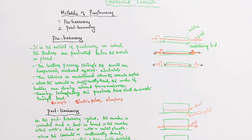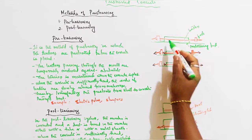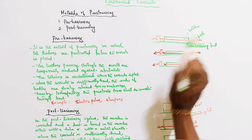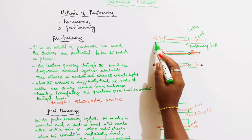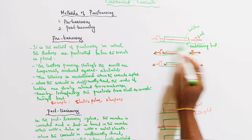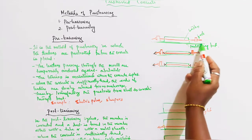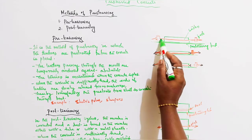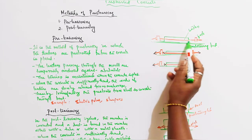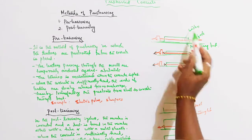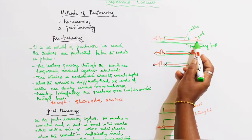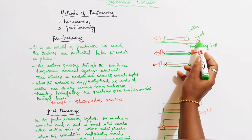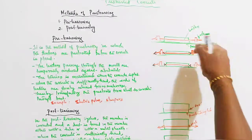Looking at the figure: we have a pre-stress beam, a tendon, a pre-stressing bed, and a beam section. We call the tendons - this is a tendon. We call an abutment jack, hydraulic jack, and anchorage.